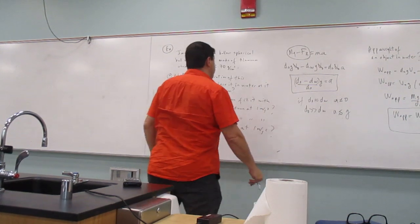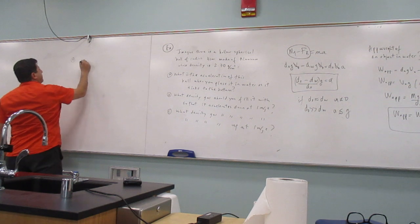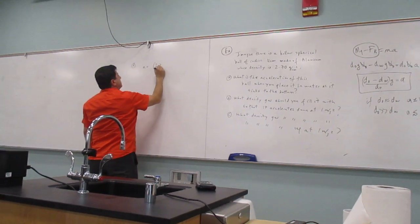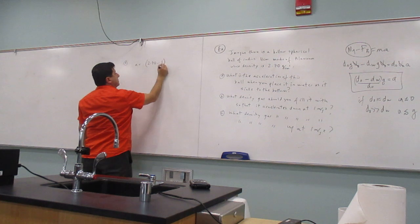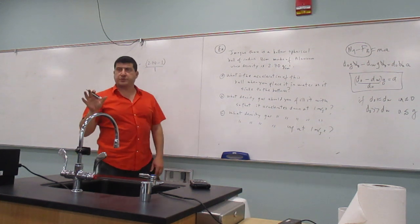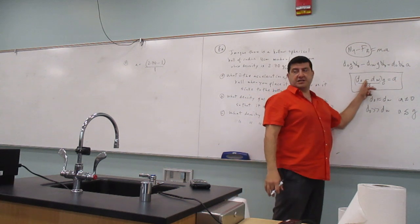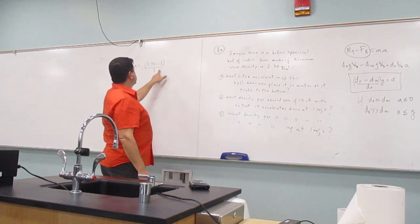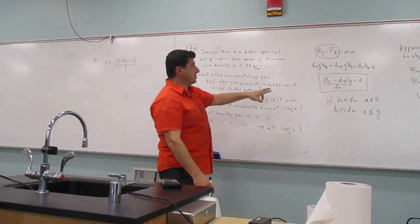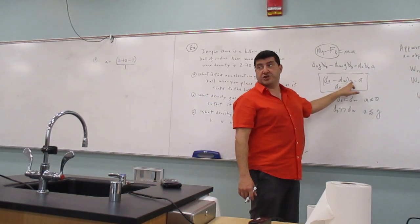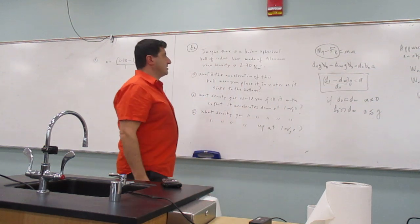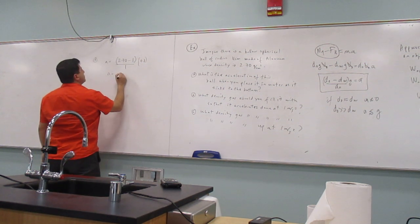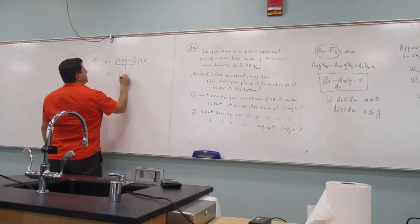Acceleration — we'll just use this. dO is going to be 2.70 minus 1, which is the density of water, over 1. Notice for this problem I'm not changing the units of the density to kilogram per cubic meter. I can keep it as gram per cubic centimeter because the density units cancel with the bottom units, and the units of A come out to be the same as the units of g, because this portion is unitless. So it's just going to equal 1.70 times 9.8.